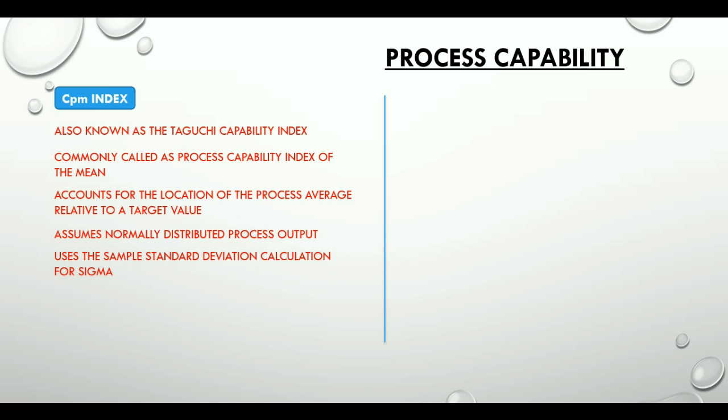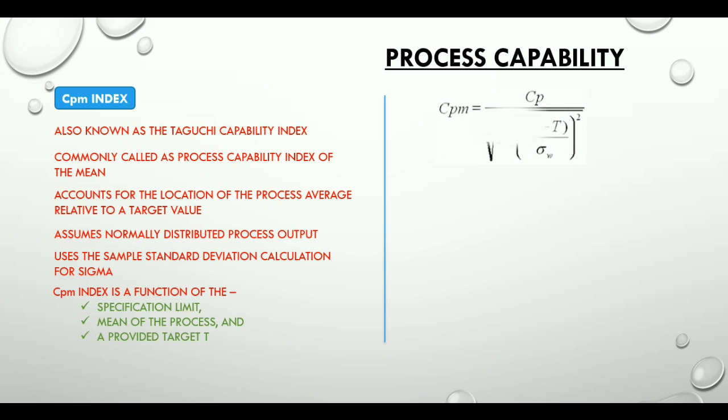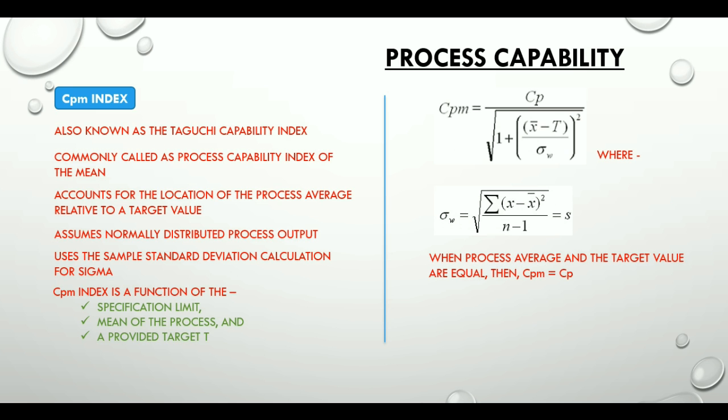CPM index is a function of the specification limit, mean of the process and a provided target which is T as in Tango. Here is the formula for the CPM index. If process average and target value are equal, then in the formula CPM becomes equal to CP. And when process average drifts from the target value, then CPM becomes less compared to CP.